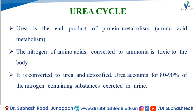Urea is the end product of protein metabolism. Protein is made up of amino acids, so urea is also the end product of amino acid metabolism. The nitrogen of the amino acid is converted to ammonia, which is toxic to our body. The amino group of the amino acid is converted to ammonia by metabolic reactions like transamination and deamination. It is then converted to urea and detoxified. Urea accounts for 80-90% of the nitrogen-containing substances excreted in the urine.